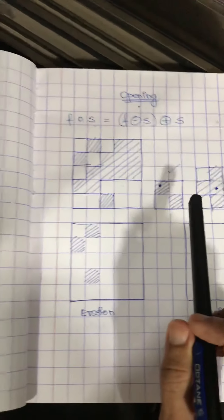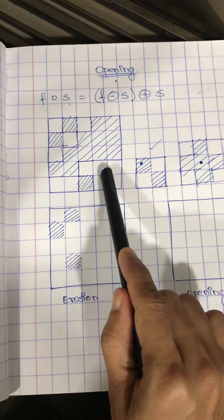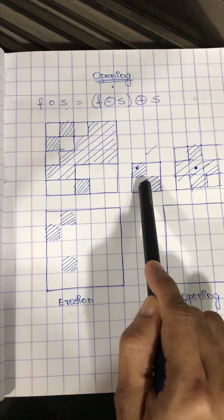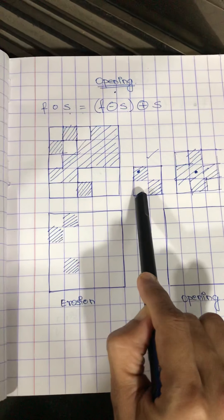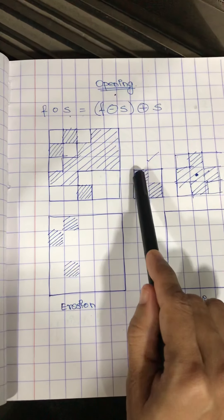So again let us revise. Let's say this is my image, this is the structuring element, this is the shape of the structuring element, dimension of the structuring element is 2 x 2, this is the origin.